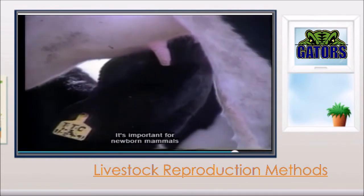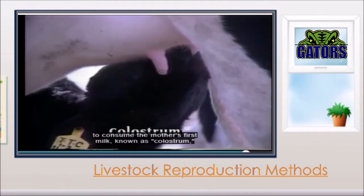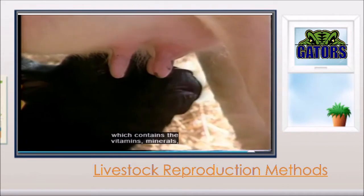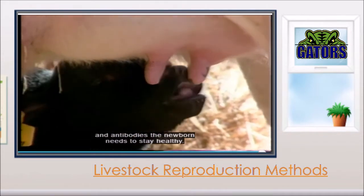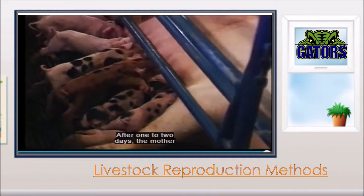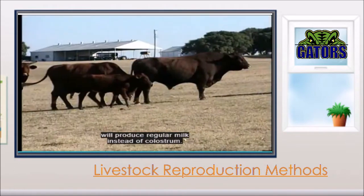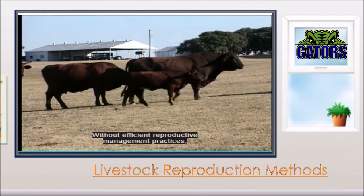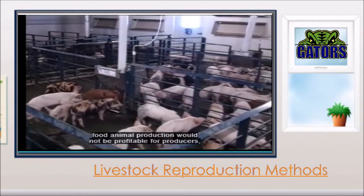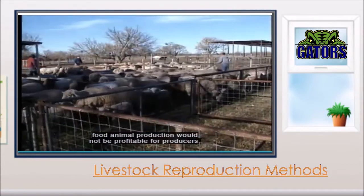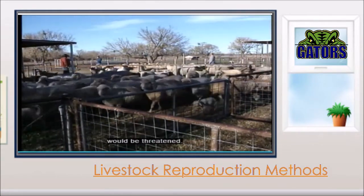It's important for newborn mammals to consume the mother's first milk, known as colostrum, which contains the vitamins, minerals, and antibodies the newborn needs to stay healthy. After one to two days, the mother will produce regular milk instead of colostrum. Without efficient reproductive management practices, food animal production would not be profitable for producers, and the food and fiber supply we depend upon in our daily lives would be threatened.